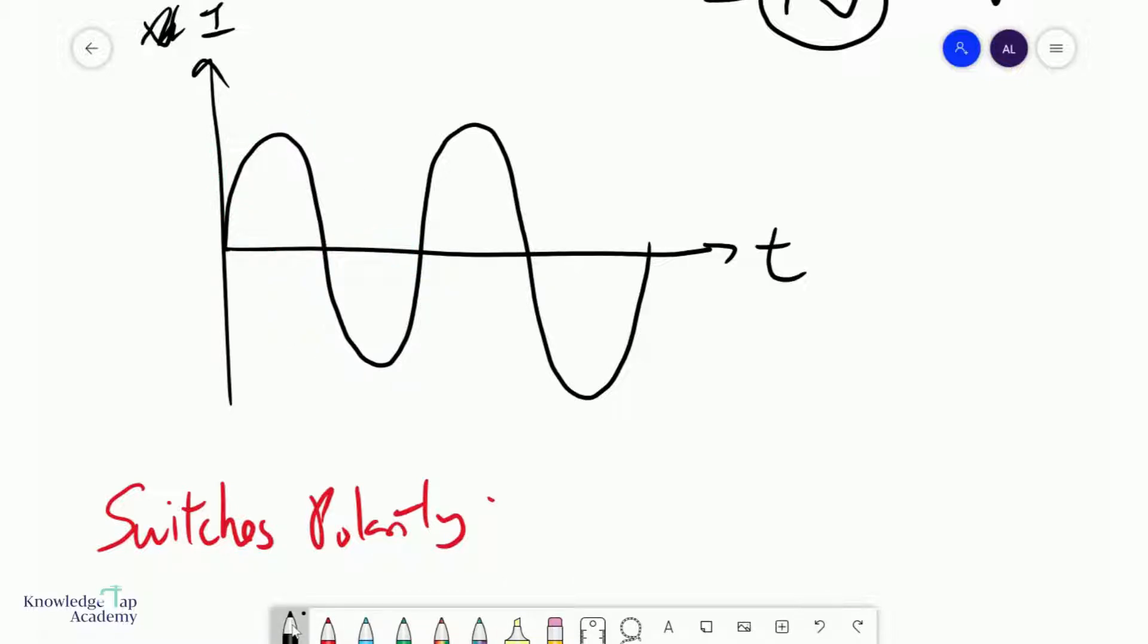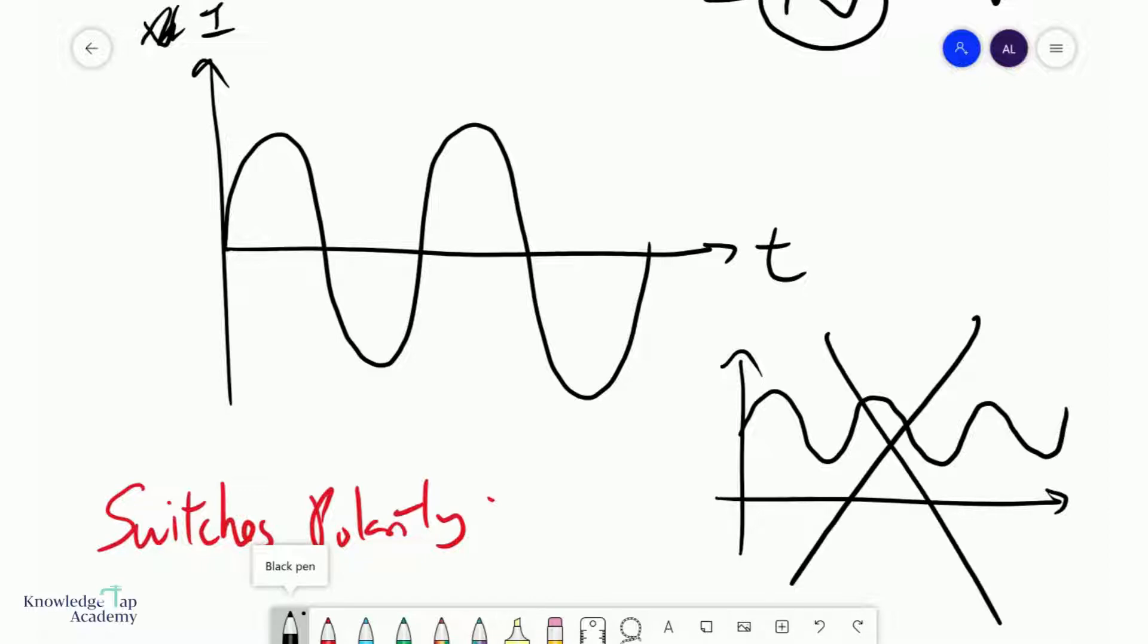If I, for example, had a source that looked like this, well, even though you can argue that it's sinusoidal, because it does not switch polarity, this is not an alternating source. So, that's one thing.